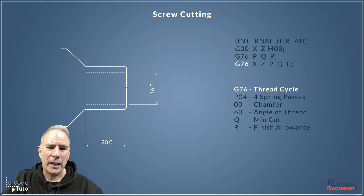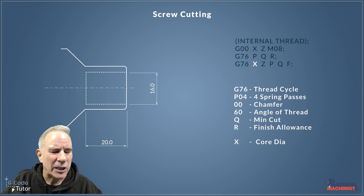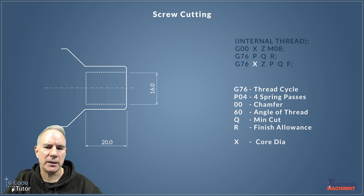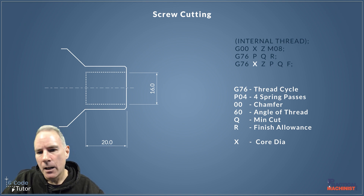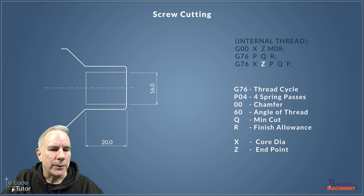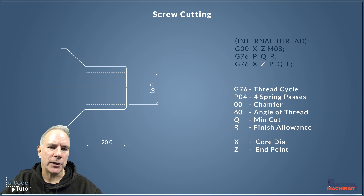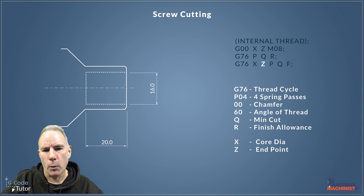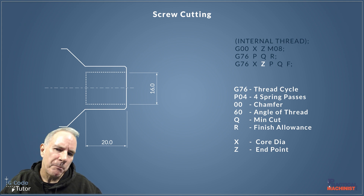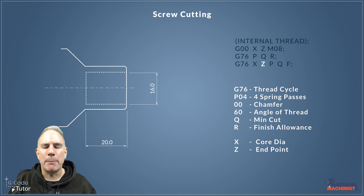The first thing on the second line is our X dimension — this time it's our thread core diameter. Whatever our thread core diameter is, we put that in here. Our Z is the length of the thread. If this is a blind hole — as I've diagrammed on the left — 20 millimeters would be the full depth of the thread. We don't want to smash into the back wall, so we might allow 0.1 mm clearance. Z is a negative number and represents the length of our thread.